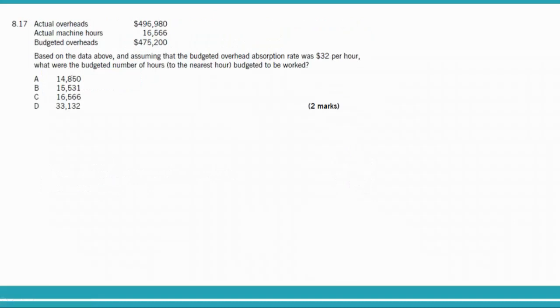Question 8.17: actual overheads are $496,980. The budgeted overhead absorption rate was $32 per hour. What was the budgeted number of hours to be worked? They haven't given us the budgeted hours directly — we need to calculate them using the OAR formula.